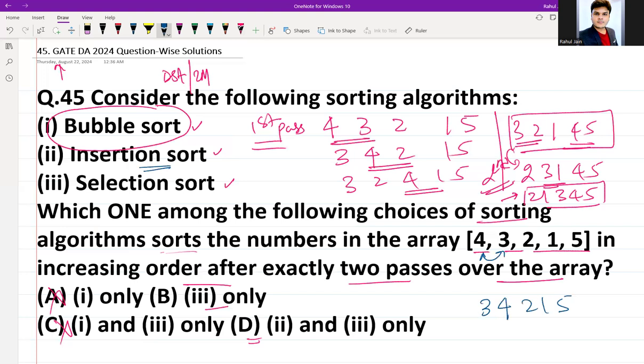And in second pass, if 4 and 2 will be compared, so it would be 3, 2, 4, 1, 5. But still 2 will again be compared with the left one, that is 3. It is still lesser. So 2, 3, 4, 1, 5. It is the output after second pass, which is also not sorted. Thus insertion sort is also not possible. So option D also gets cancelled. So only option 3 is possible, that is selection sort.